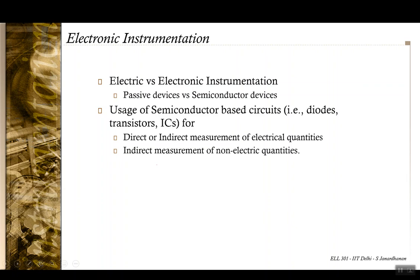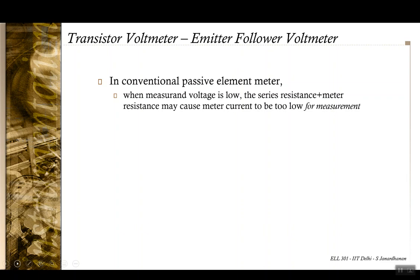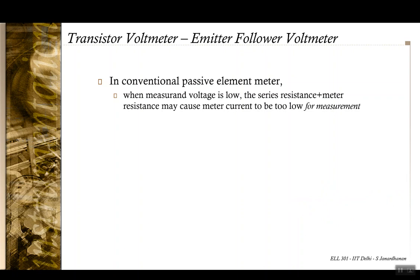The motivation behind using electronic instrumentation: if you are measuring a very low voltage, say in the millivolt range — a DC voltage V — and you have a PMMC meter with resistance Rm, and since it's a voltmeter it has a series resistance Rs, the current flowing through this meter is Im = V / (Rs + Rm).